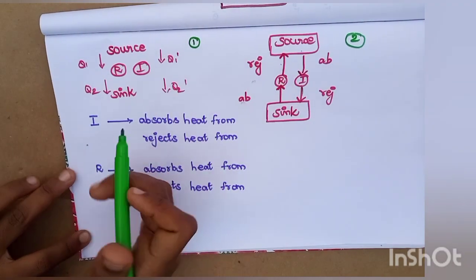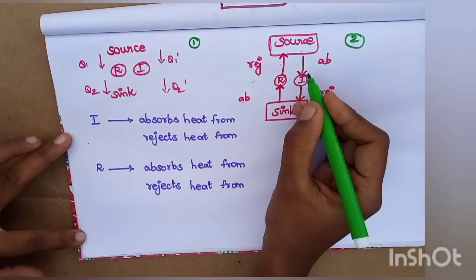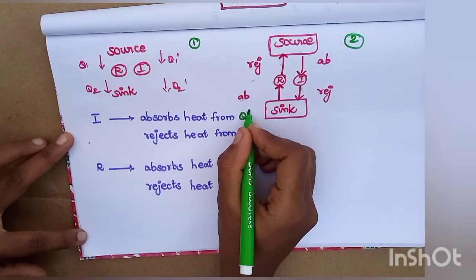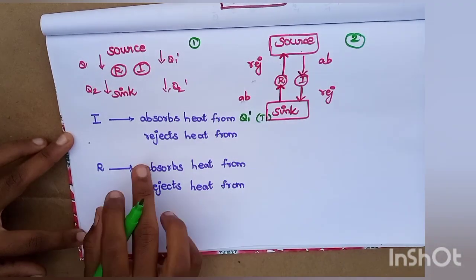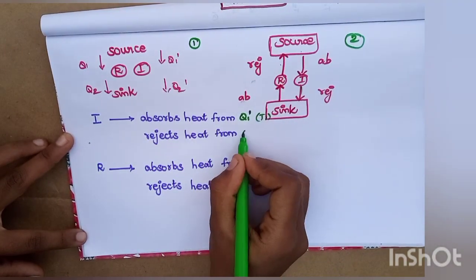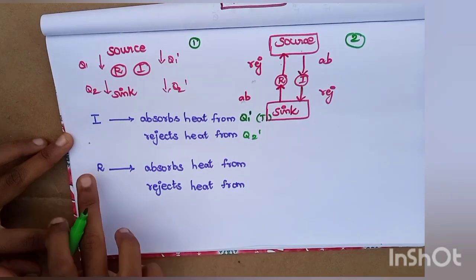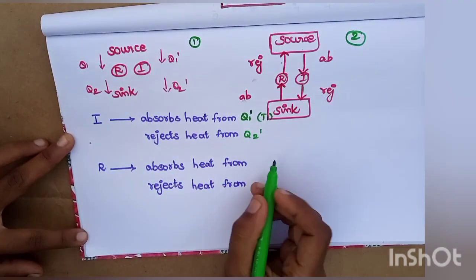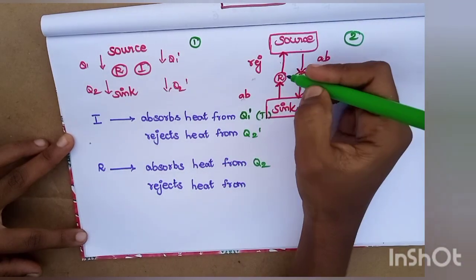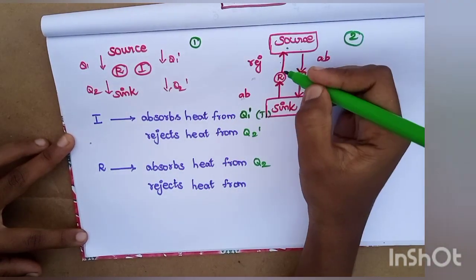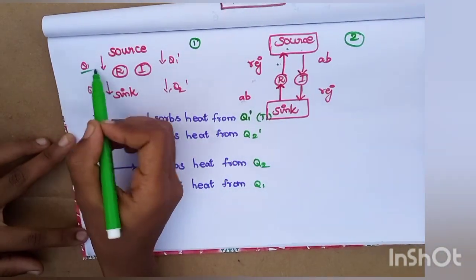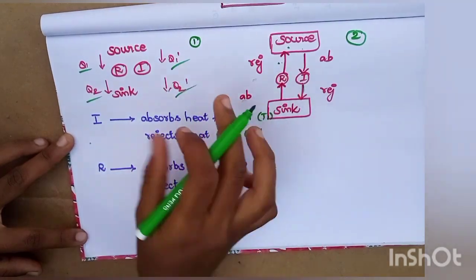The irreversible engine absorbs heat from the source at temperature Q1, Q1-dash, temperature T1, then rejects heat to the sink as Q2-dash. Then the reversible engine absorbs from the sink as Q2, then rejects heat back to the source. So we have Q1, Q2, Q1-dash, Q2-dash.